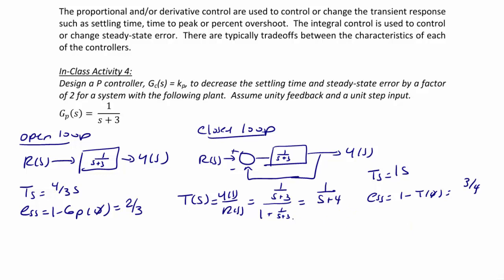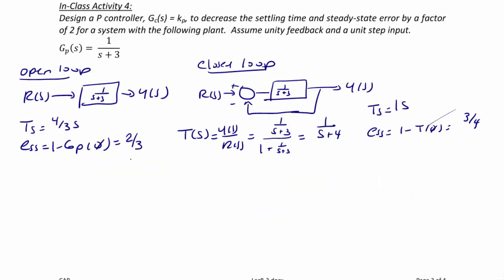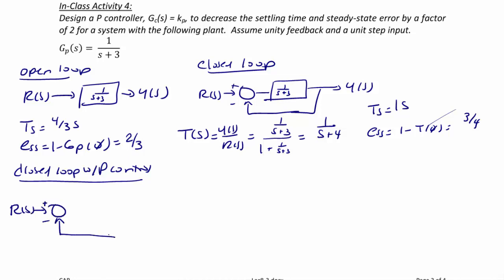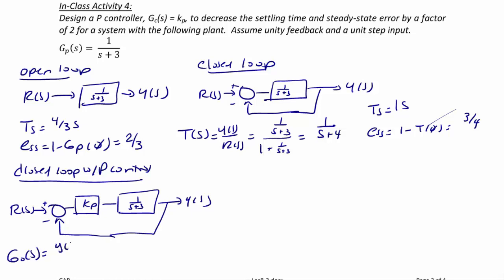So now let's look at how we can use a proportional controller to improve performance. We have a closed loop system with a proportional controller: input R(S), summer with plus and minus, unity feedback, controller KP, plant 1 over S plus 3, and output Y(S). The closed loop transfer function G0(S) equals Y(S) over R(S) equals KP times 1 over S plus 3, divided by 1 plus KP over S plus 3, which simplifies to KP over S plus 3 plus KP.